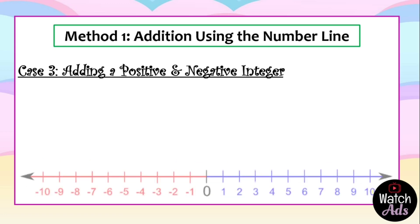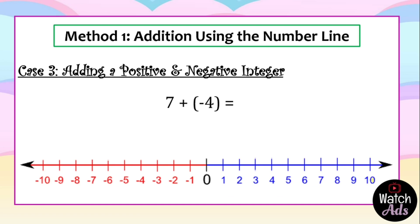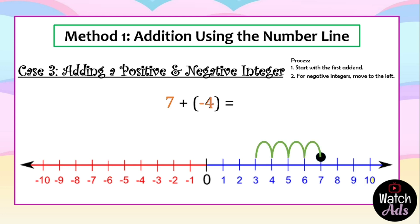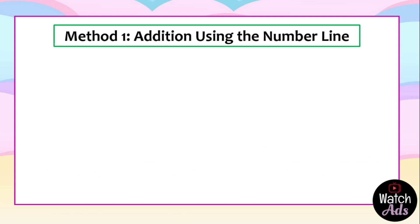For our third case, adding a positive and a negative integer, we follow the same process. Our example is seven plus negative four. We start with the first addend, seven, which is positive and located on the right side of the number line. We put a mark at seven, then add negative four. Since negative four is negative, we move four units to the left: one, two, three, four. We end up at three. Final answer: three.